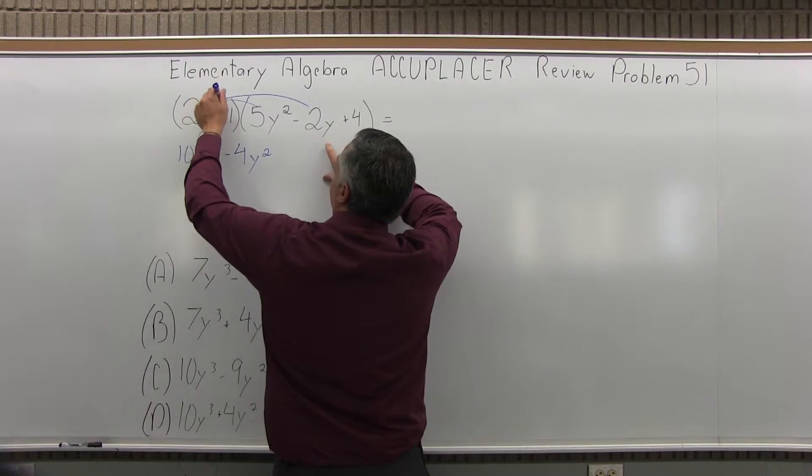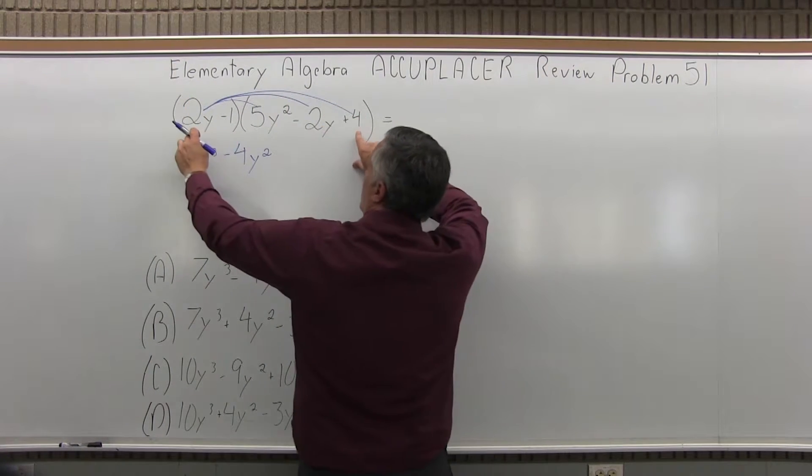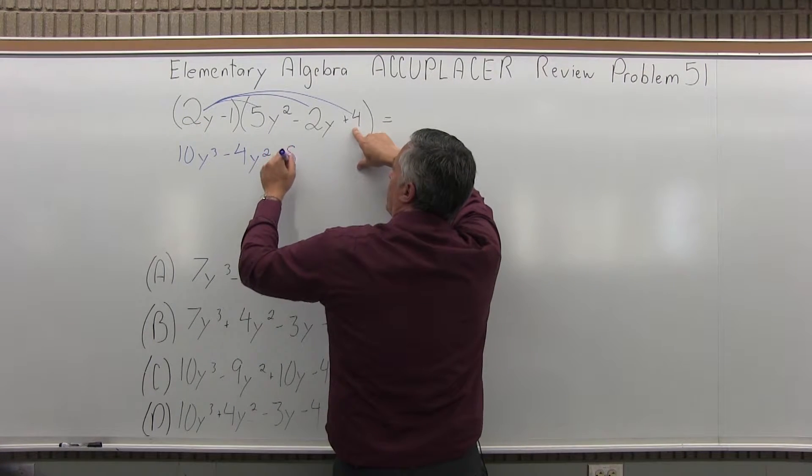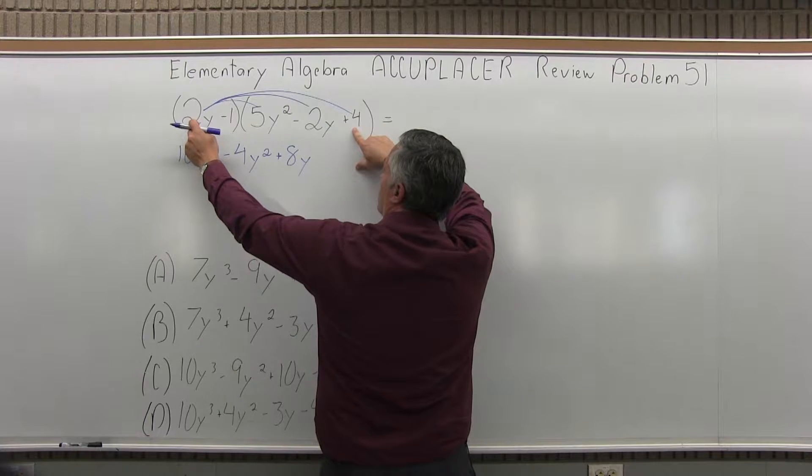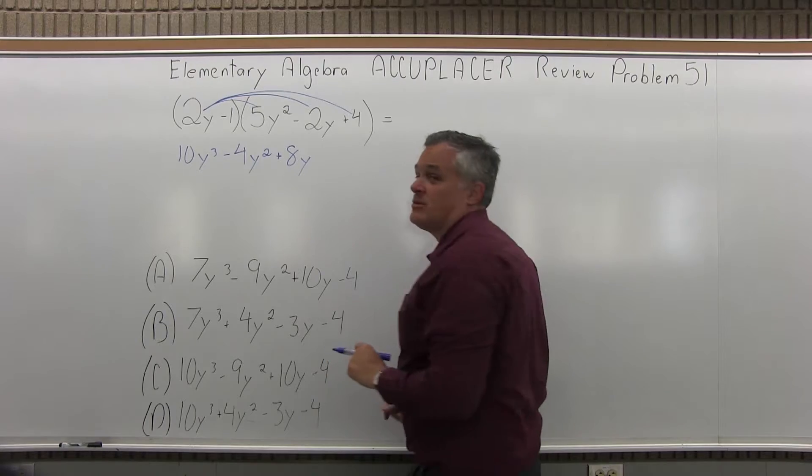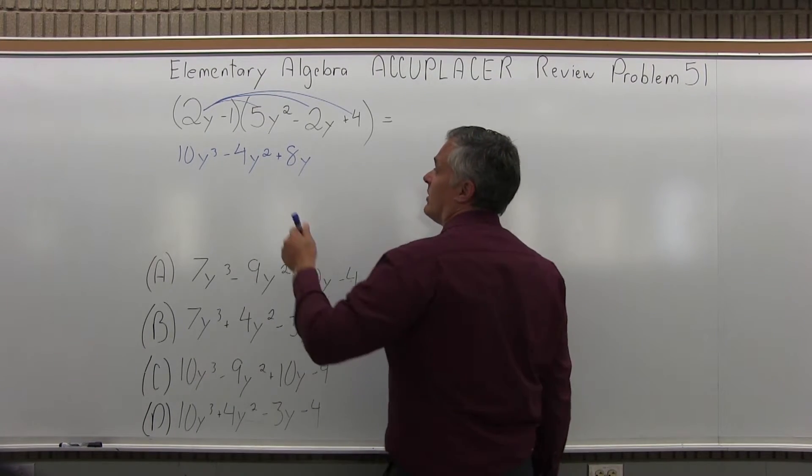And now, 2y times 4 will be 8y, positive 8y. So that takes care of the 2y from the first set of parentheses. Now I'll do the same process with the negative 1 that's next to that 2y.